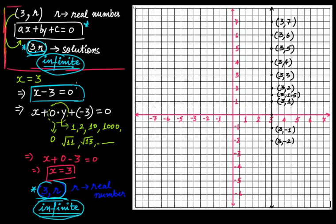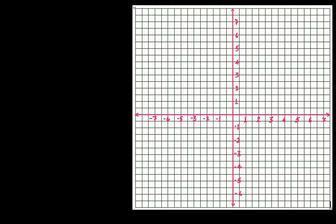So x = 3, or equivalently x − 3 = 0, is the equation of this particular line passing through the point 3. In general, if your line passes through a point A on the x-axis, then the equation of that line will be x = A.